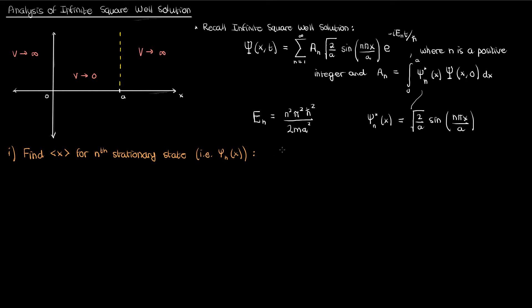This hopefully shouldn't be too cumbersome. You start by applying the formula for the expectation value of position for the wave function psi sub n — that's the integral over the entire spatial domain of psi_n conjugate times x operating on psi_n. Since x operating on psi_n is just x times psi_n, I can simplify this. I can also change my limits of integration to 0 and a because the wave function is 0 outside the boundaries of the infinite square well.